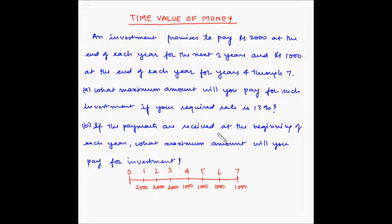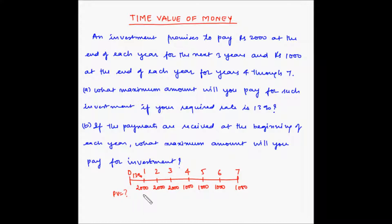Part A asks: what maximum amount will you pay for such an investment if your required rate is 13%? If you were to make an investment today, how much will that amount be so that you get this stream of cash flows at 13% per annum? So what is the present value? This present value will be the sum of the present values of each of these individual cash flows.